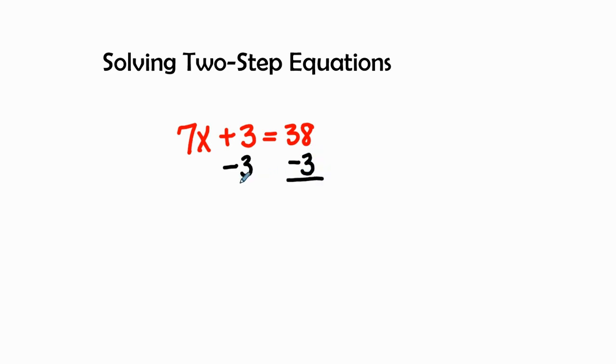I'm going to add negative 3, and what I do on one side of the equation I need to do to the right side. So positive 3 minus 3 is 0, and 38 minus 3 would be 35.